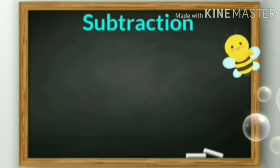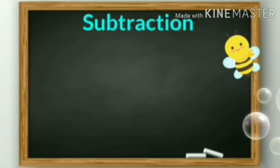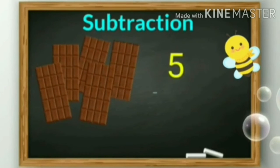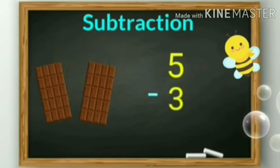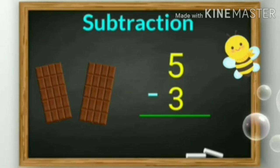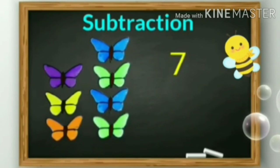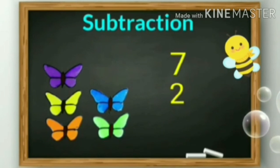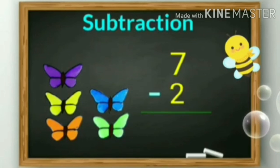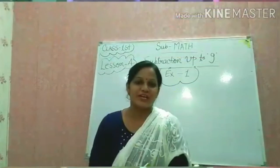There is one more way for subtraction. See here — if I have five chocolates, okay, now I ate three. How many chocolates are left with me? Yes — two. Next — you can see here: 1, 2, 3, 4, 5, 6, 7 — seven butterflies. Do butterflies ud gayi. So how many butterflies are left? Five. Five butterfly bachi. So students, I hope — what is subtraction?